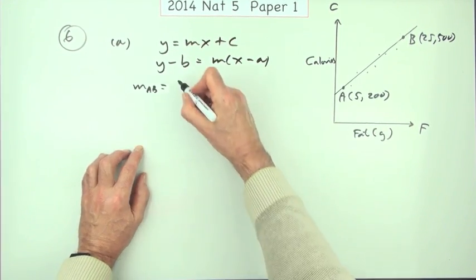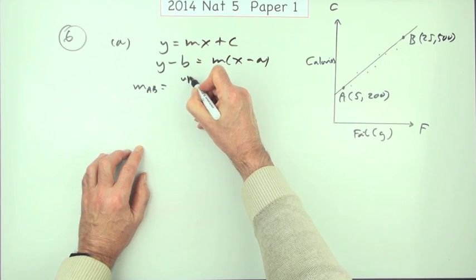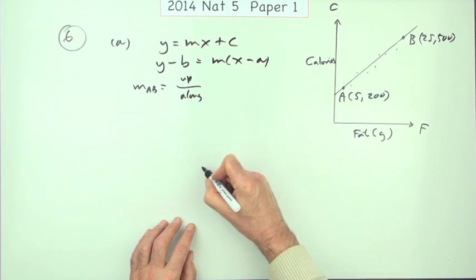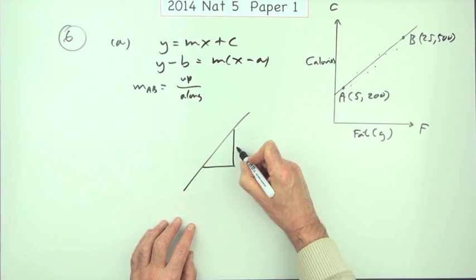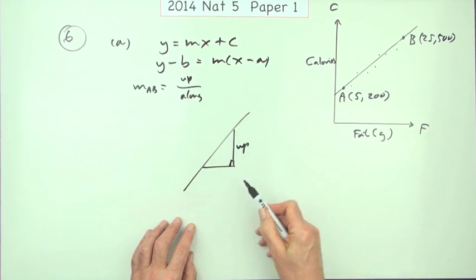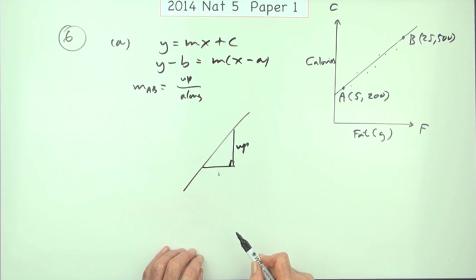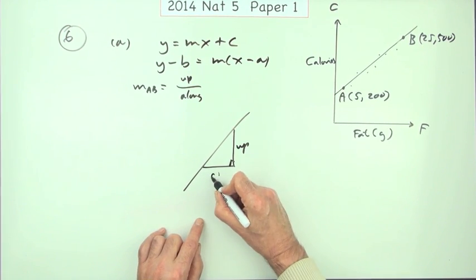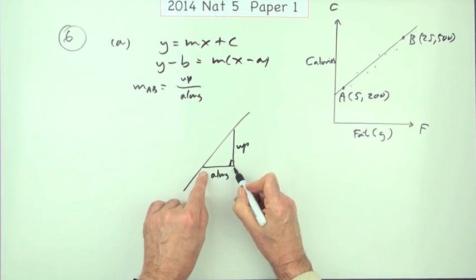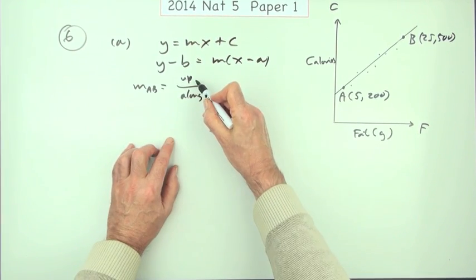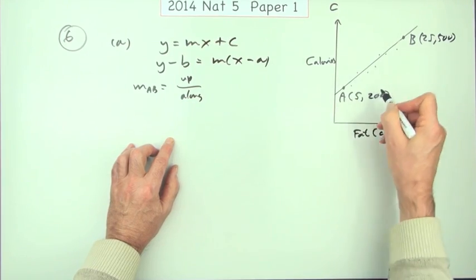And the gradient comes from the distance up over the distance along the line. The slope of a line really means how much do you climb up for every step along? So if you don't step along one, you'd have to divide by how far you've stepped along to find out how much you climb for every one step along. And how will you get the distance up here? Well it'll be a difference in the coordinates.